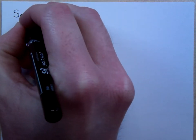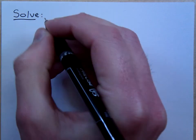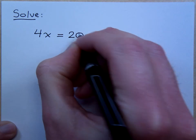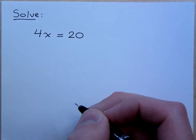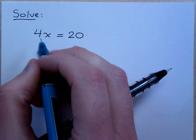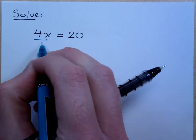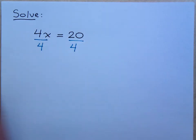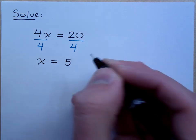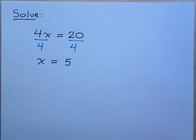Do you guys remember back when life was easy? Remember when I could have something like this: 4x equals 20. How would we solve something like 4x equals 20? How do you get rid of that 4? When you solve, you're trying to get x by itself — trying to get the variable by itself. Divide by the coefficient, which is 4. So I do this and I get x equals 5. This was the good old days. In the good old days, I had to make sure answers were integers.